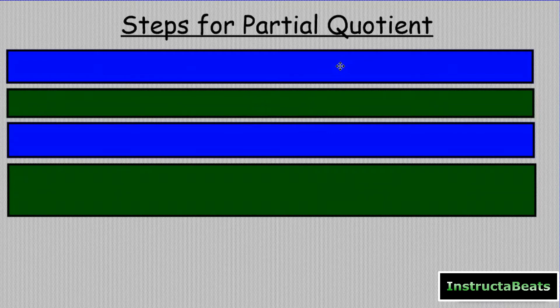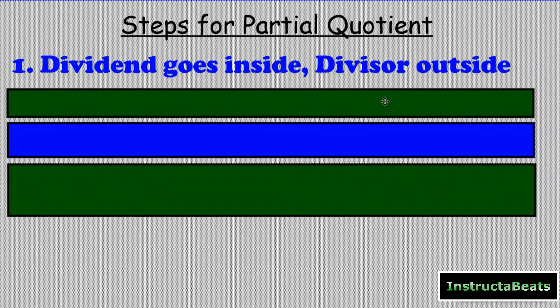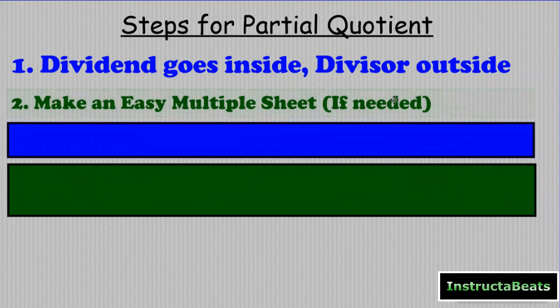Our steps for partial quotients. Number one, the dividend goes on the inside, the divisor on the outside, just like our song says. Number two, we're going to make an easy multiple sheet if you need that. Some teachers aren't going to make you do that. I would make you do it if you were my student, but that's okay.